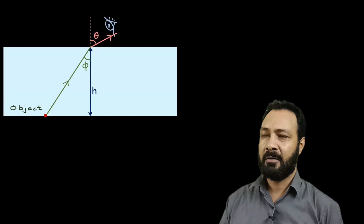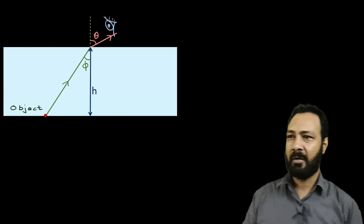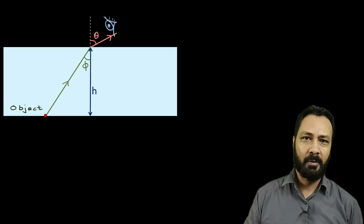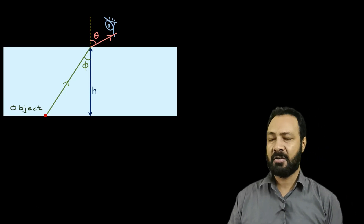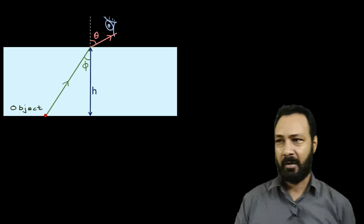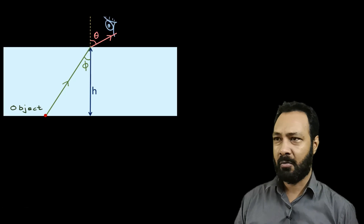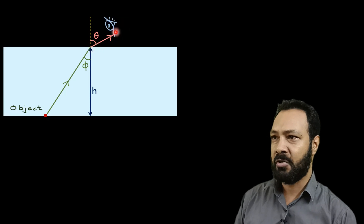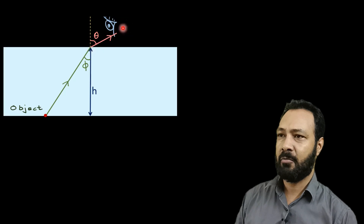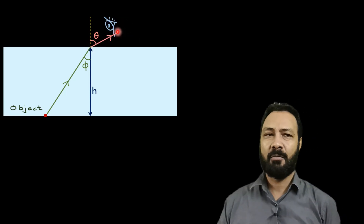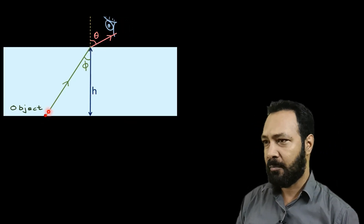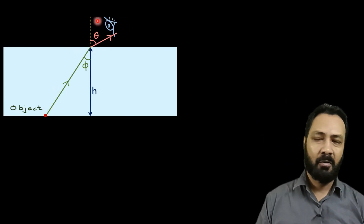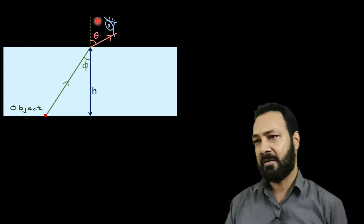For image formation we need a minimum of two rays. Two incident rays — their intersection gives the object — and the corresponding two refracted rays' intersection gives the image. So we need two rays. One ray I have taken. Now I can't choose the other ray arbitrarily. The other ray is determined by the line of sight of the observer. So the second ray is the incident ray whose corresponding refracted ray goes to the observer's eye, and the intersection of these two rays gives the image.